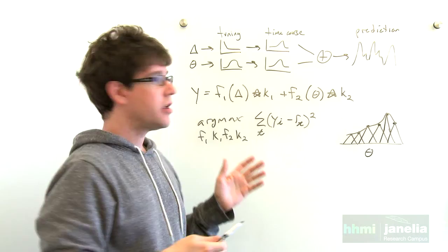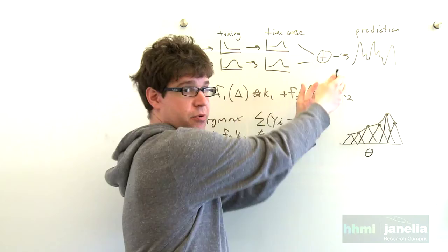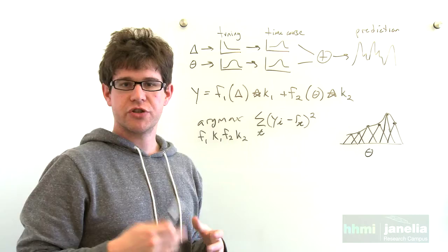And we optimize, do an optimization, to find the parameters of the model that best predict the response. And we can then use the quality of the prediction as a function of these variables to describe whether neurons are involved in either touch representation or whisk representation.